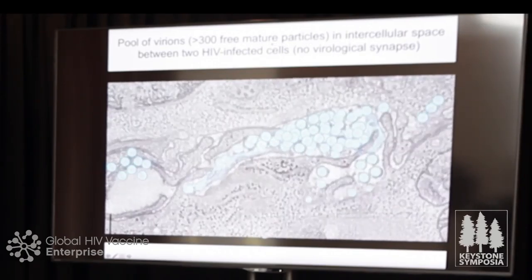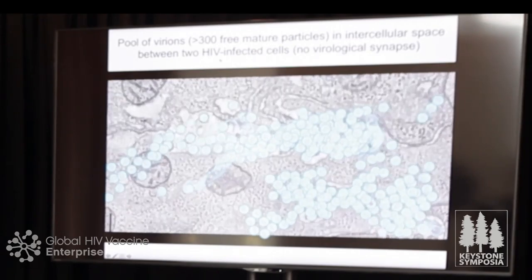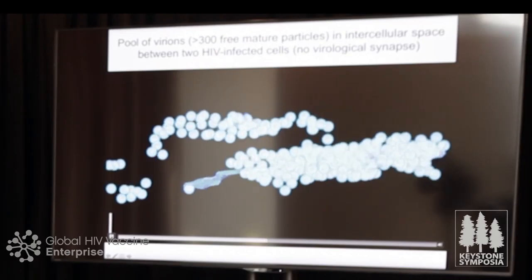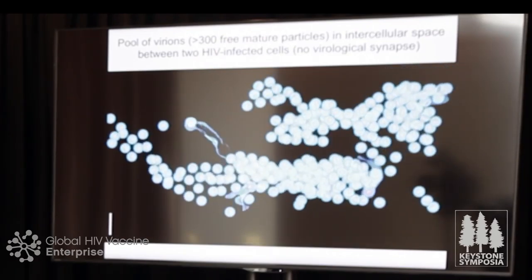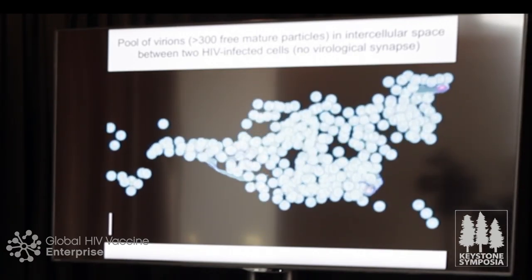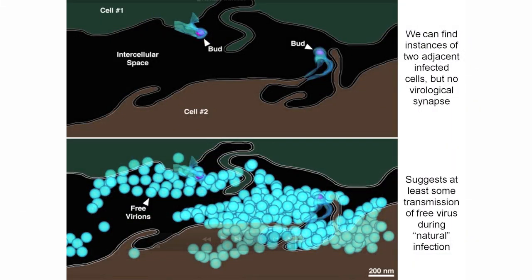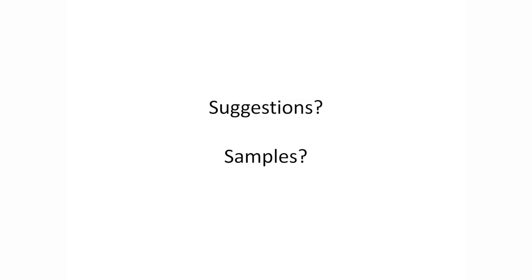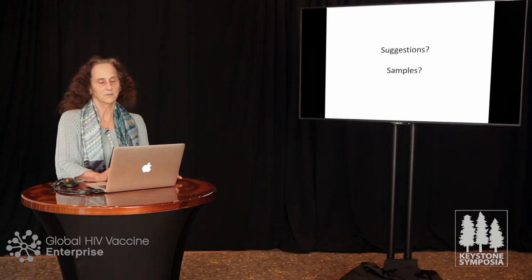We do find pools of over 300 mature virions — identified by their collapsed cones — in the intercellular space between two HIV-infected cells, both confirmed infected by budding virions. We don't see a virological synapse there. This suggests that at least some transmission of free virus occurs during a natural infection, with the caveat that this is an HIV-infected humanized mouse. We'd like to continue this in more physiologically relevant samples, such as SIV- or SHIV-infected macaque samples.